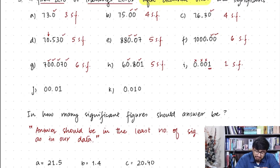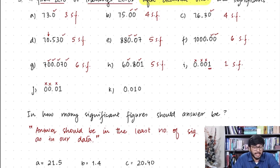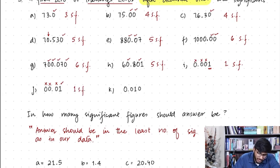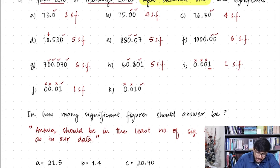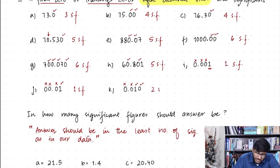For 00.01: again the zeros are not sandwiched and the zero after the decimal is not a trailing zero — only the 1 is significant, giving one significant figure. For 0.010: the trailing zero at the end is significant, but the zero before the decimal and the zero immediately after the decimal are neither sandwiched nor trailing zeros, so only the 1 and the final trailing zero are significant — two significant figures.